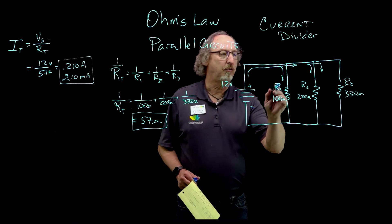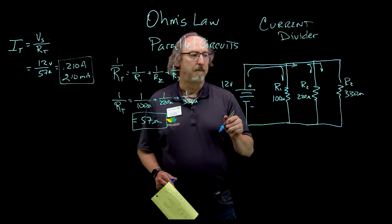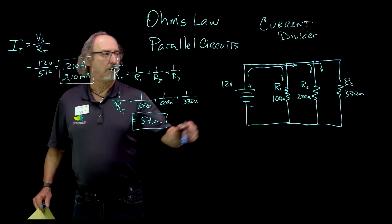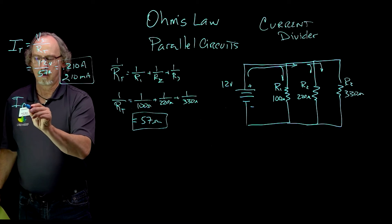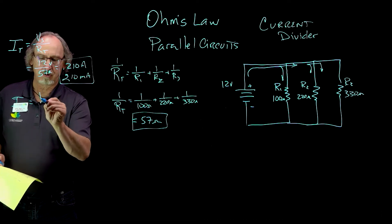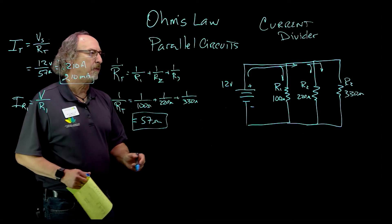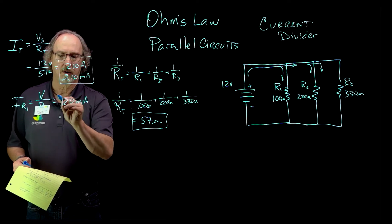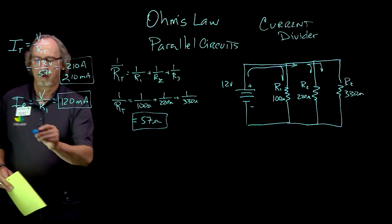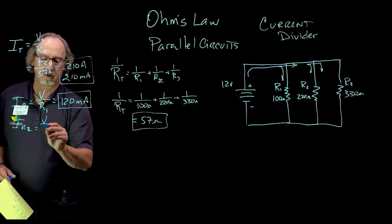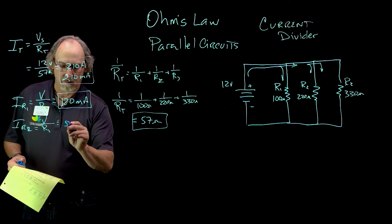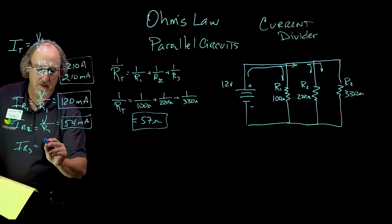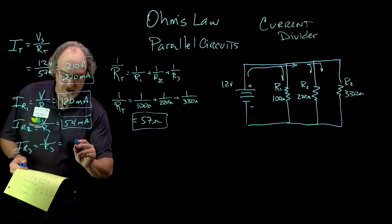Now I can calculate how much current is going down each branch. One thing to remember: the higher the resistance of a resistor, the lower the current — they are inversely proportional to each other. Current down branch one is voltage divided by R1, which gives me about 120 milliamps. I do this for each branch: current down the second branch, dividing by R2, gives about 54 milliamps, and for R3 I come up with 36 milliamps.